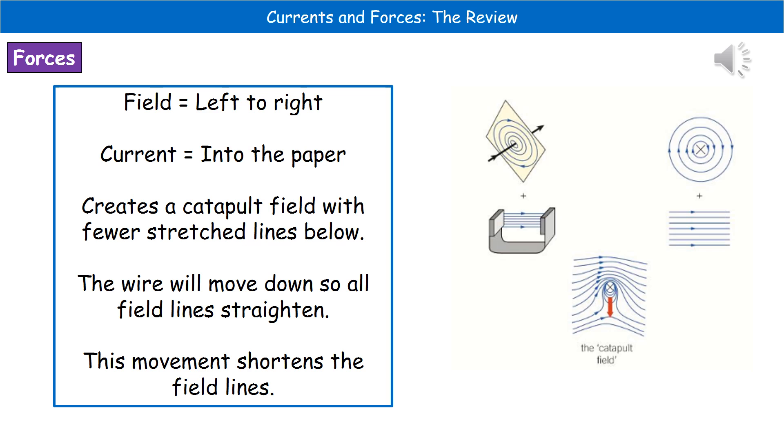What we actually find is we've got more field lines above the wire than below at that point. So we've generated a force that acts on that wire that's going to push it down towards the bottom of that existing magnetic field. The whole reason behind that is because that movement allows those field lines to shorten, and any field line aims to be as short as possible. So it moves the wire in the direction to make them shorter.